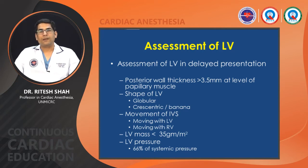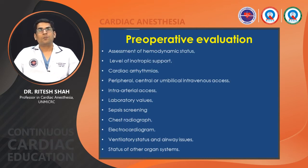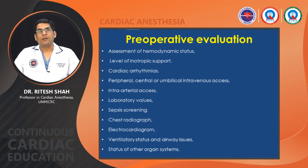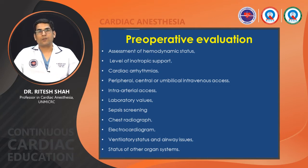Preoperative evaluation includes assessment of hemodynamic status, inotropic support, any arrhythmias, peripheral or central arterial and venous cannulation — umbilical venous and arterial access if other veins are not available. Laboratory values should be checked, screening for sepsis done, chest radiograph and ECG obtained. Airway issues, ventilatory status, and the status of other organ systems will be assessed before proceeding to surgery.